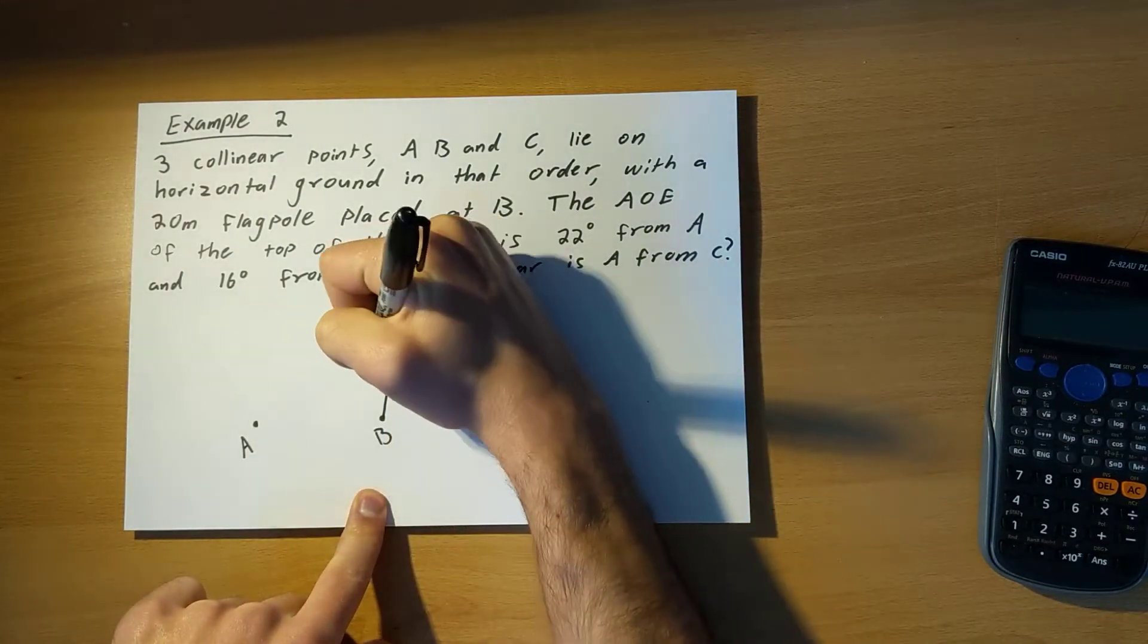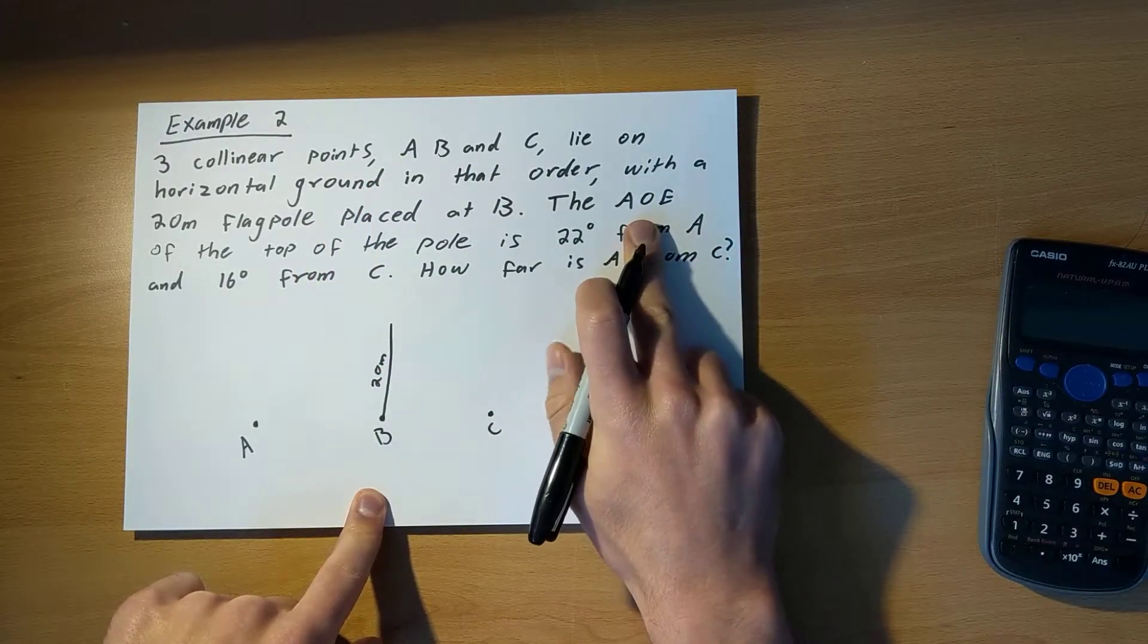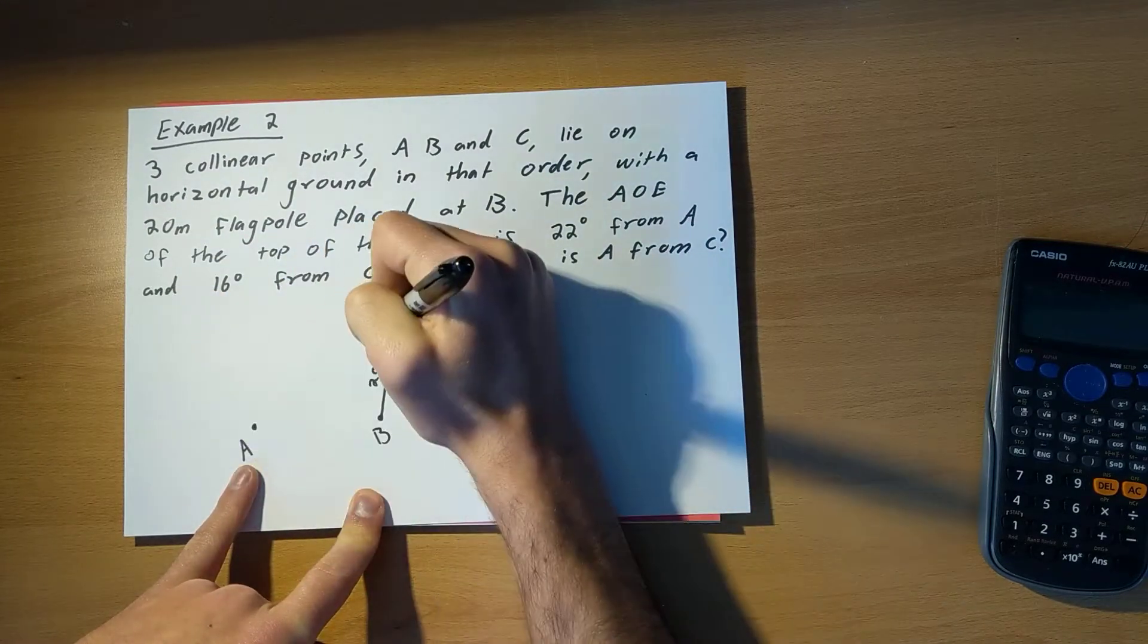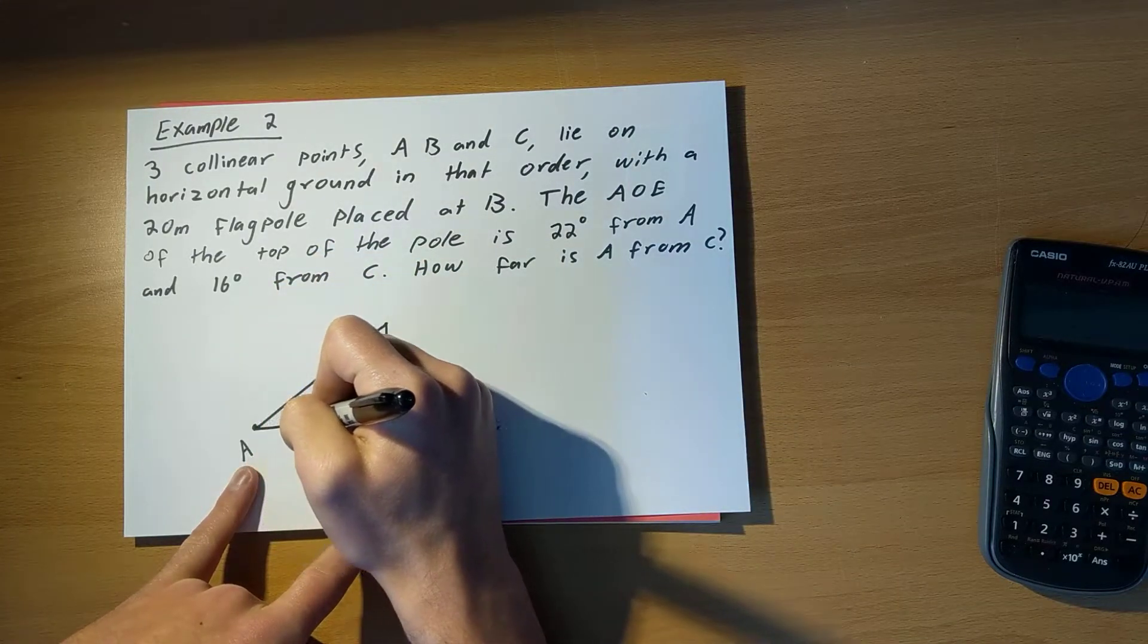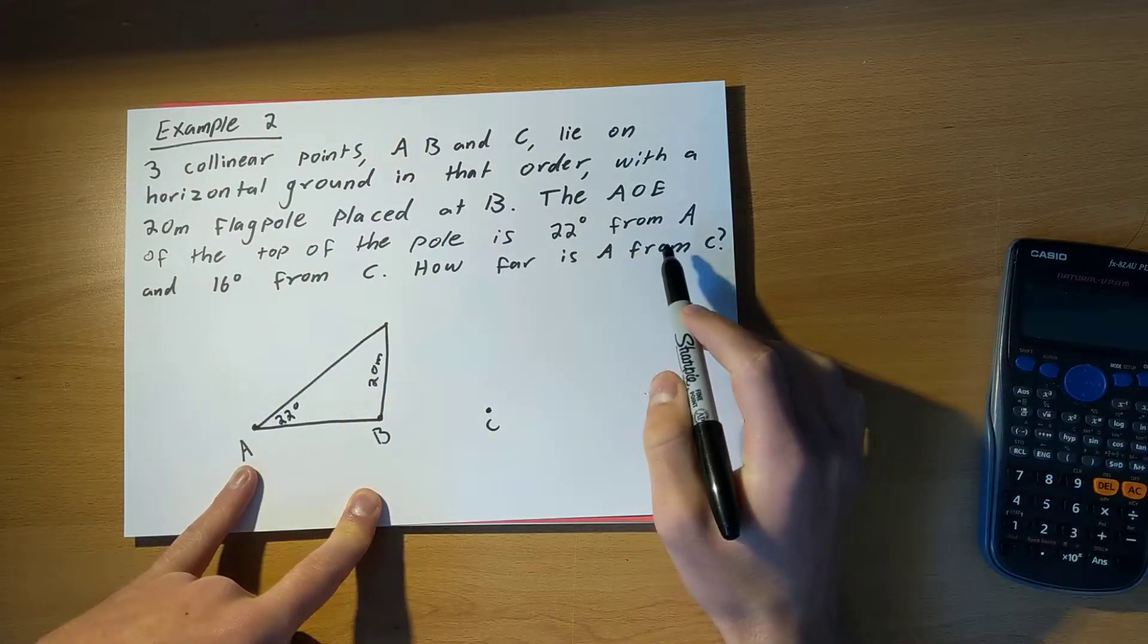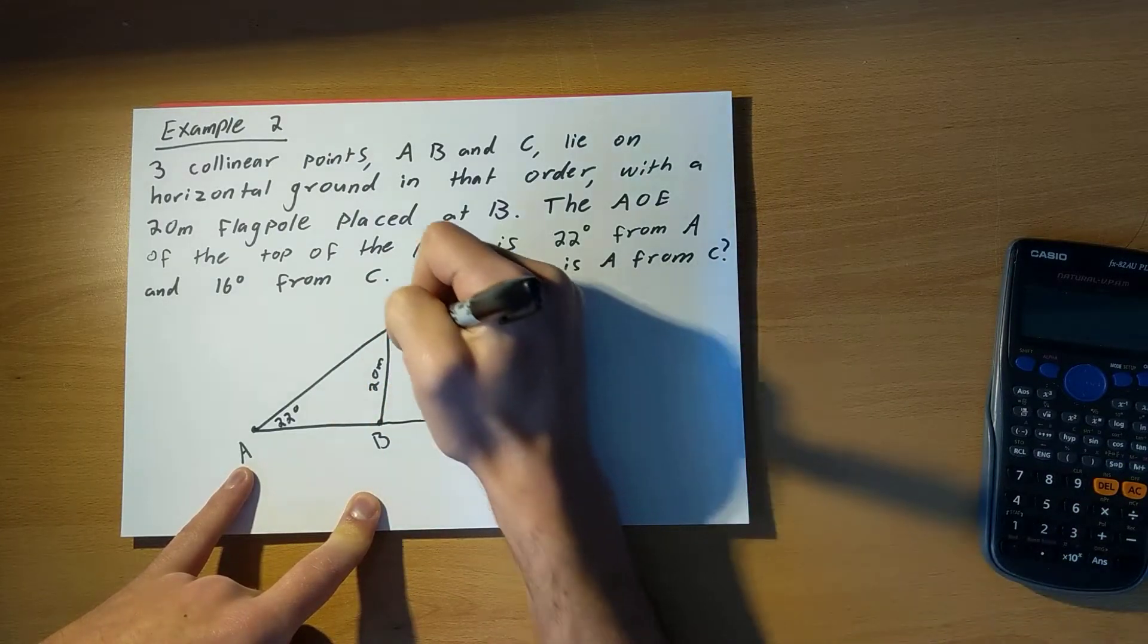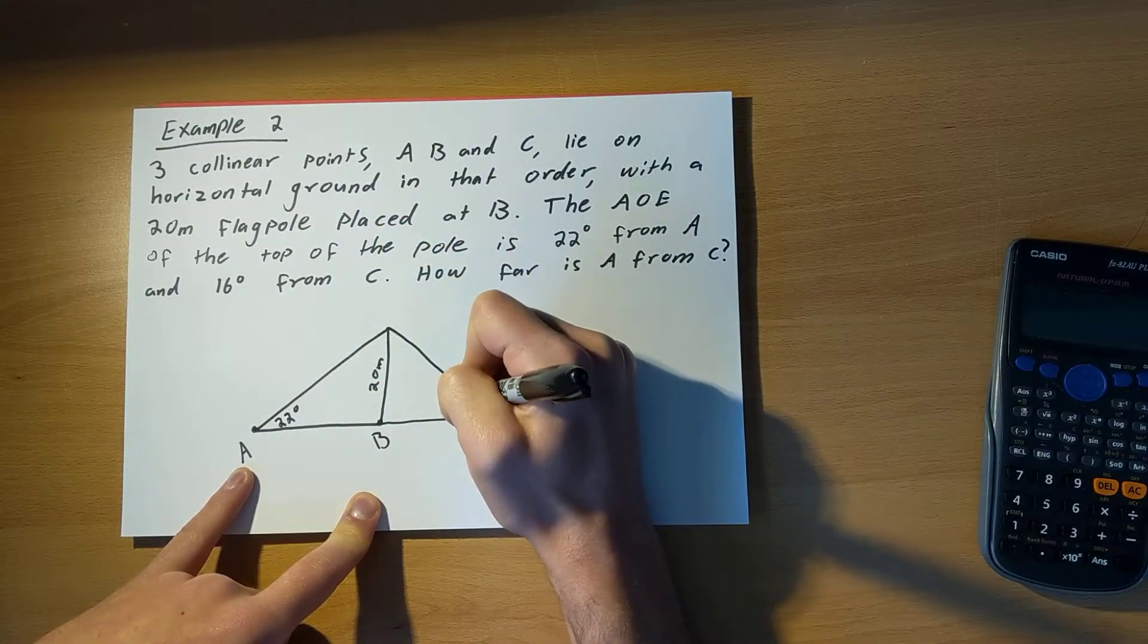So I've got a 20 metre flagpole over there. Now, the angle of elevation of the top of the pole is 22 degrees from A. That means from A, the angle that this path, the top of the pole from A, makes with the horizontal is 22 degrees. And it's got an angle of elevation of 16 degrees from C. So again, from C, I draw my horizontal, and then I draw my path from C to the top of the flagpole. And the angle that that makes is 16 degrees.